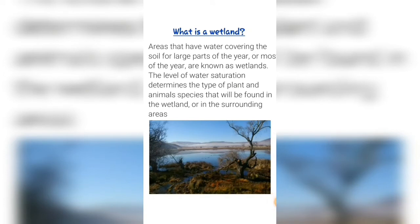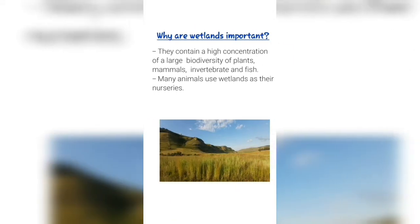What is a wetland? Areas that have water covering the soil for large parts of the year or most of the year are known as wetlands. The level of water saturation determines the type of plants and animal species that will be found in the wetland or in the surrounding areas.